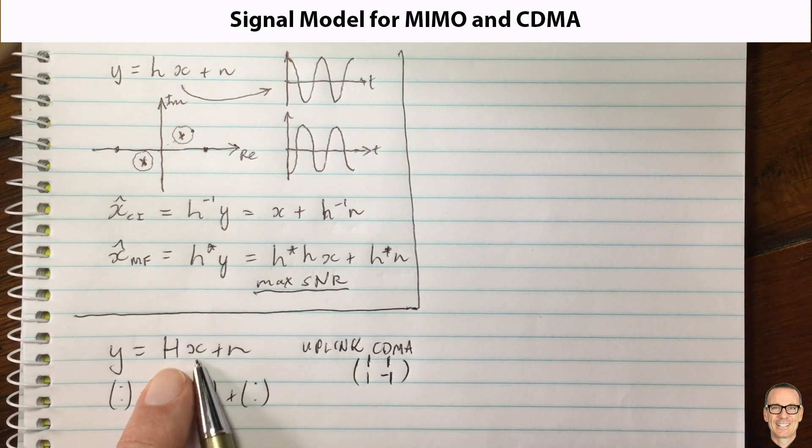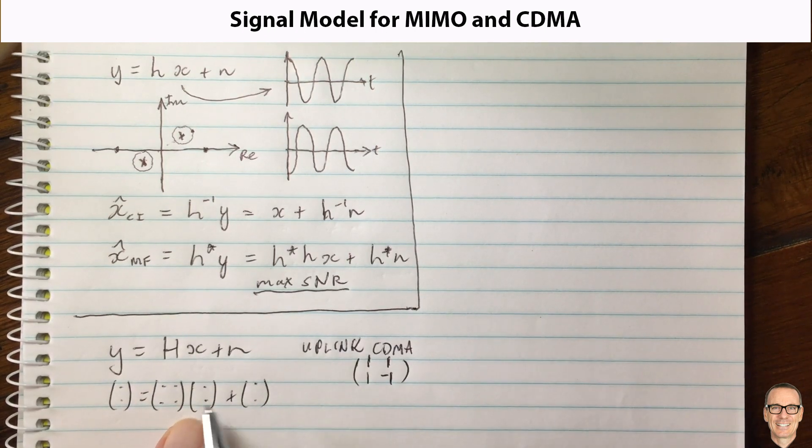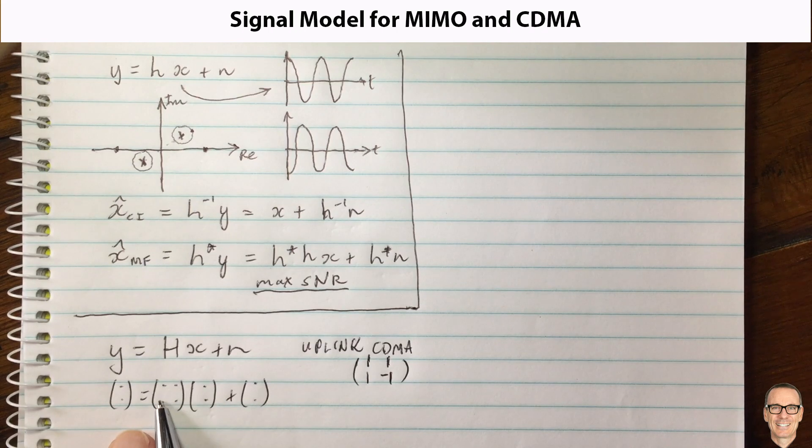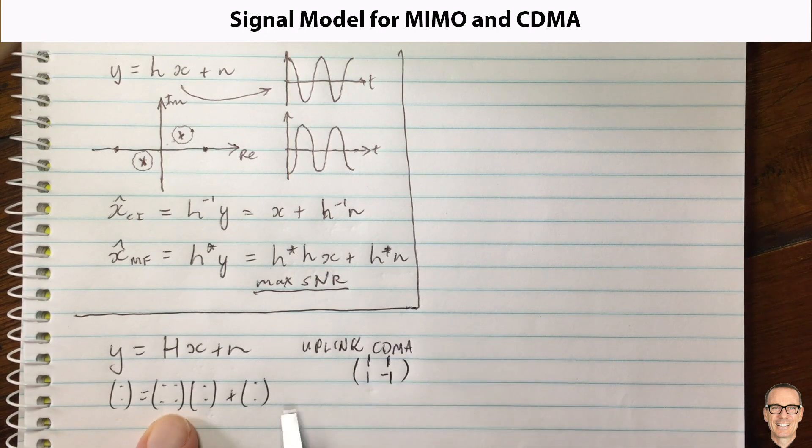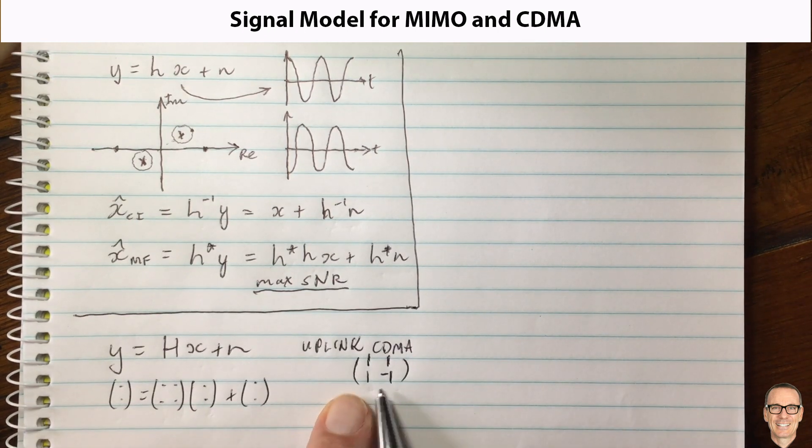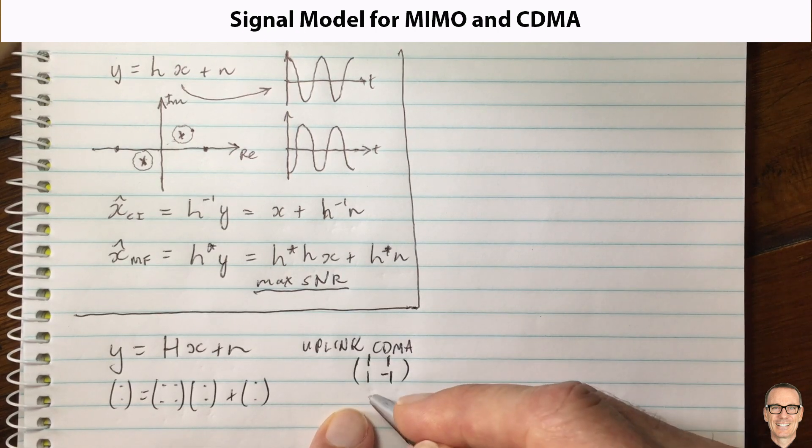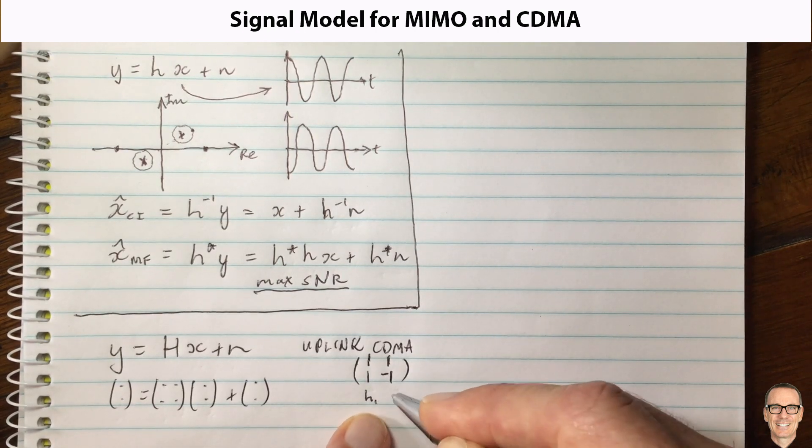So you're putting a symbol in for each of the users here, and the first symbol is being multiplied by the first column which in this case is one one. So the first user has a spreading sequence one one in this example, and the second user has a spreading sequence one minus one. And you can see that these two are orthogonal.